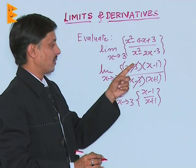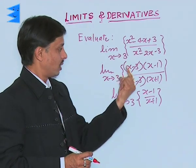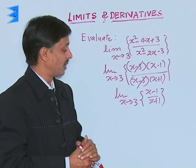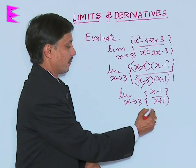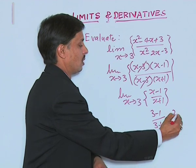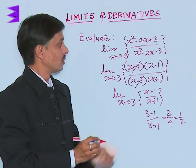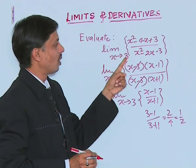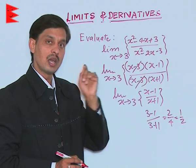After cancelling that term, particularly because of that the question is coming in the indeterminate form, we will now put the value of x as 3. This becomes 3 minus 1 upon 3 plus 1: 2 upon 4, which becomes 1 by 2. So the limit value of the function at limit x tending to 3 is half.